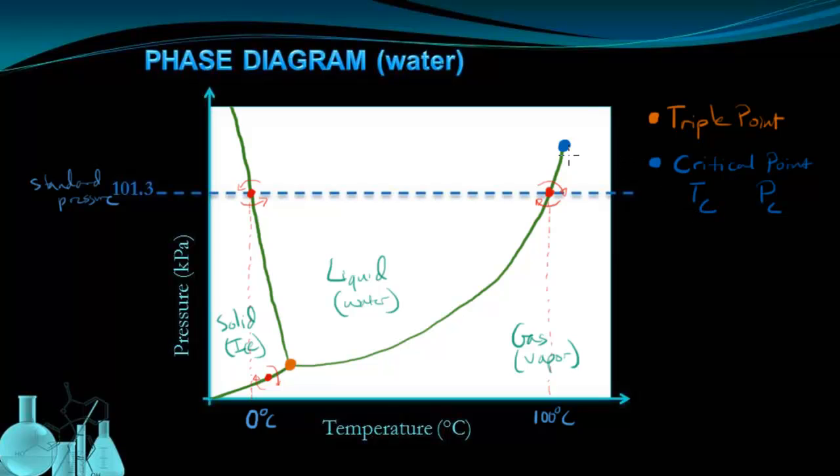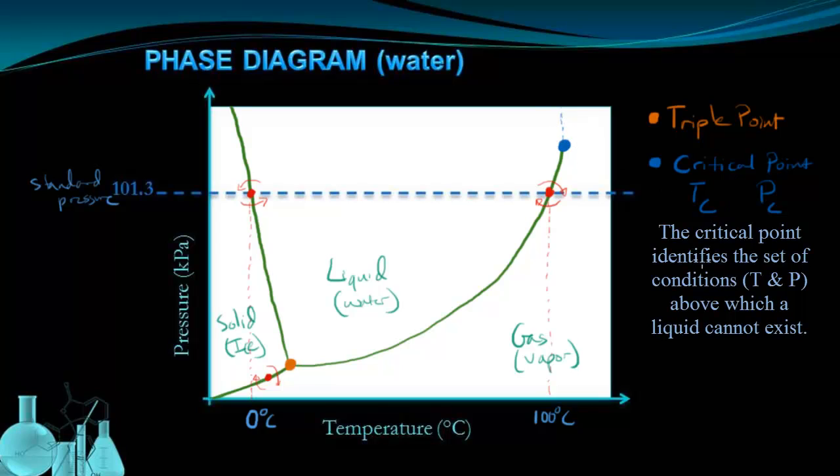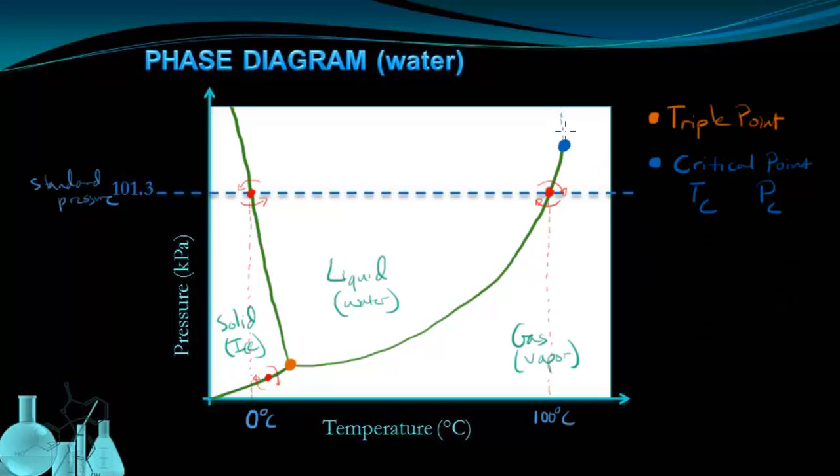All this means is that if you go higher than this temperature, so if you go past this temperature, it's impossible for a liquid to exist. So we call it the critical point, because past this point you can't have a liquid regardless of what pressure you have. And in fact, when you get into this region of critical pressure and critical temperature, when you go past that, you get a new sort of state that's called a supercritical fluid.